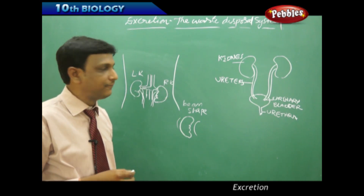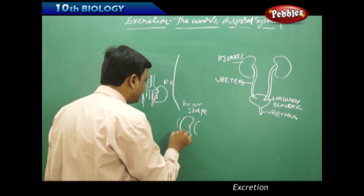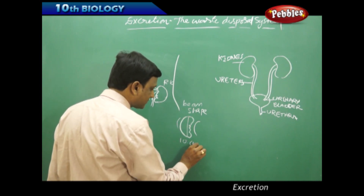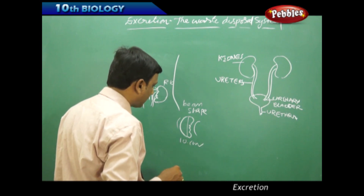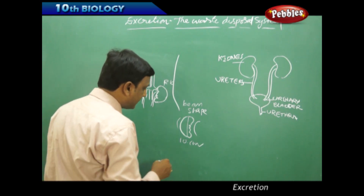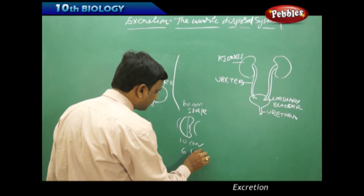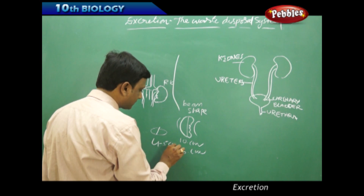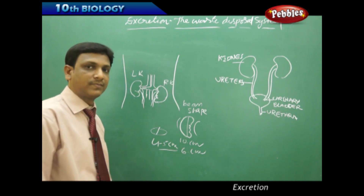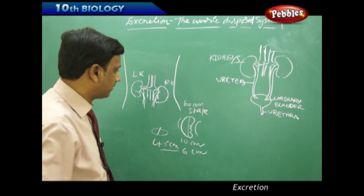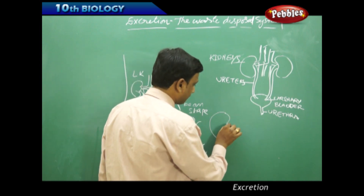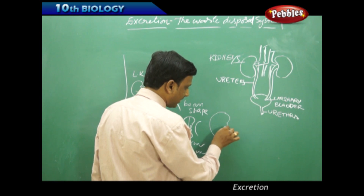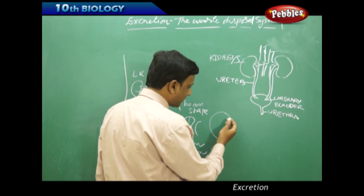Looking at the size of the kidney: the length is around 10 centimeters, the width is around 6 centimeters, and the diameter in cross-section is around 4 to 5 centimeters. These are the measurements of the human kidney.